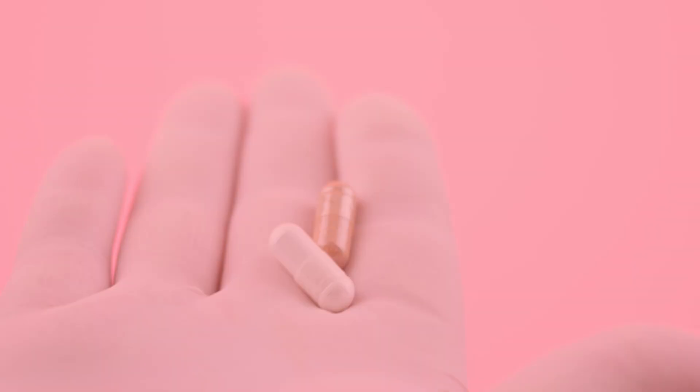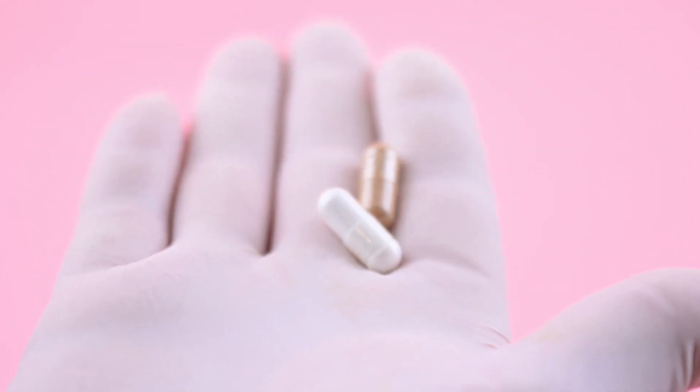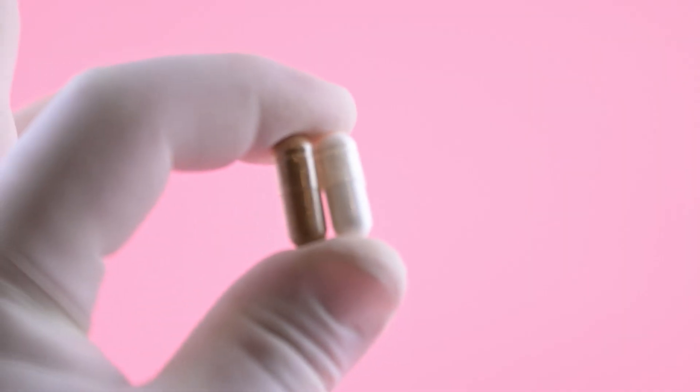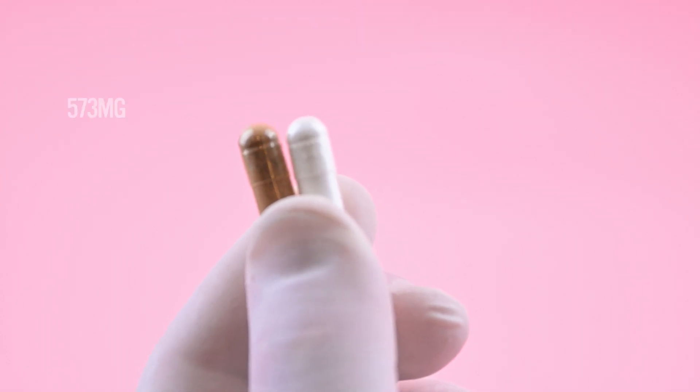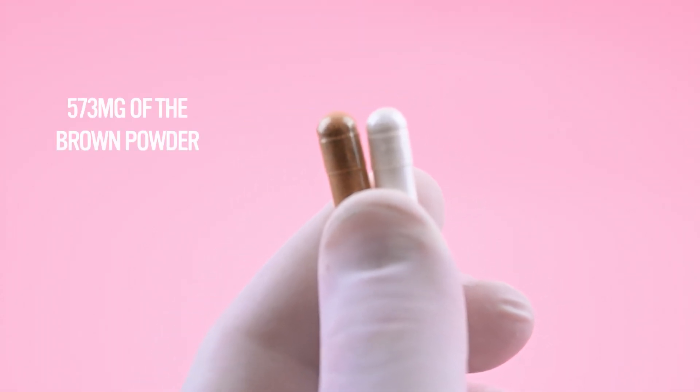But why is this necessary? These are two different supplements, both in a size 00 capsule. The first capsule holds 665 milligrams of a white powder, while the second capsule holds 573 milligrams of a brown powder.